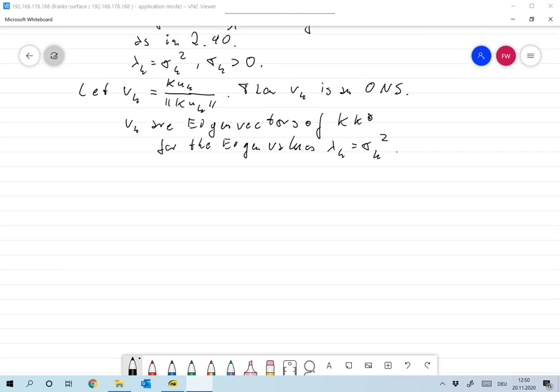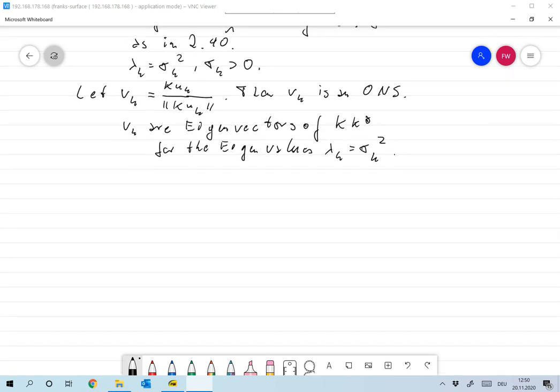And I also claim, and that's the main statement, if I take for all u in X, I have that Ku can be represented very simply: the sum overall k, sigma_k scalar product of u and u_k times v_k.